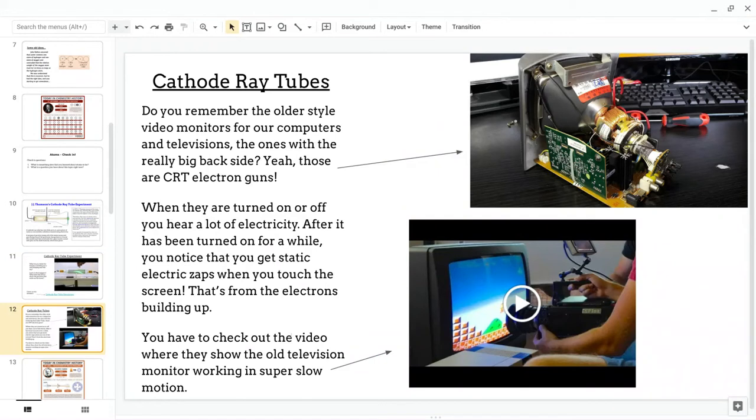And there's a video I want you to watch also that's really cool. So, yeah, read through this when you get a chance. But these old TV sets with really big backsides, those are cathode ray tubes. And, again, I'm not going to watch this now. I want you to take the time.